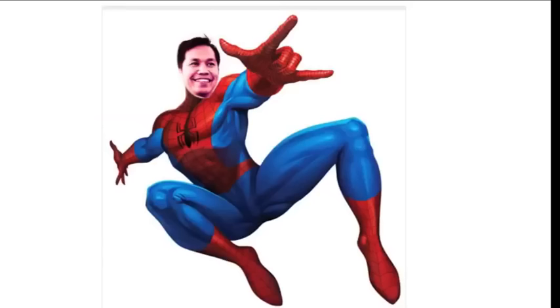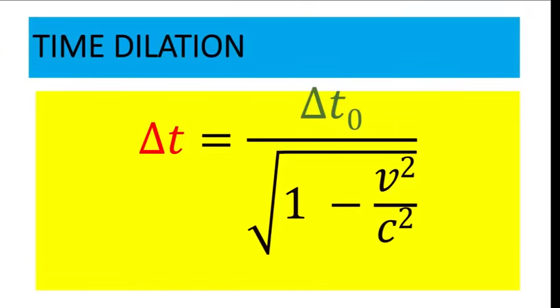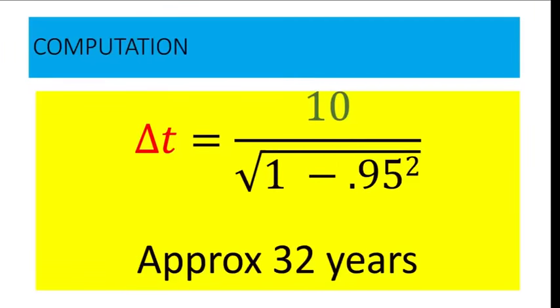The brother who is an astronaut went on a deep space mission traveling at 95% the speed of light. After 10 years in space according to the astronaut's clock, he went back to visit his brother who is earthbound. But to his surprise, his brother had aged a lot — 32 years compared to his 10 years. What explains this paradox? The answer is time dilation.